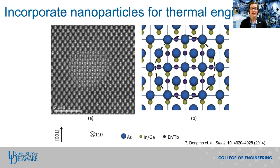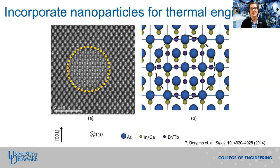In addition to growing layered materials, MBE can also be used to grow nanoparticles. On the left, you can see an STEM image of a terbium-erbium arsenide nanoparticle embedded in an indium-gallium arsenide film. These nanoparticles actually self-assemble during the growth of the film — it is more energetically favorable for the terbium-erbium and arsenic atoms to form a nanoparticle embedded within the matrix than to scatter randomly throughout the film. Embedding self-assembled nanoparticles within a film can radically change the properties of that film, including very different heat transport properties, improved terahertz light detectors, and applications in solar cells.